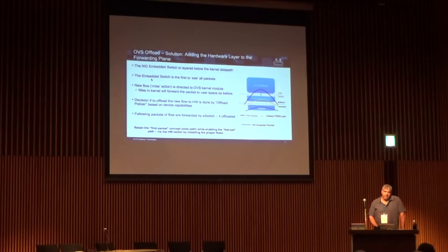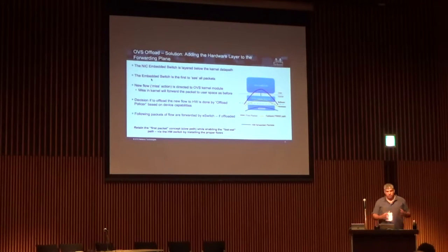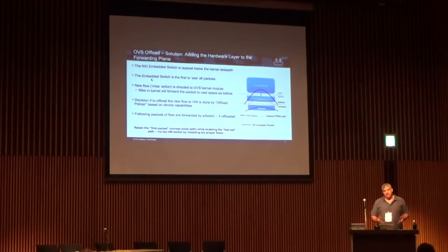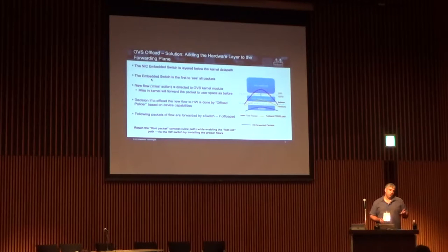Our performance numbers use VXLAN encapsulation for the traffic, and we get about 25 to almost 30 million packets per second without any CPU required. When you compare to DPDK — because our comparison is against DPDK Open vSwitch, not plain Linux — we get much better performance with zero CPU. Typically a DPDK OVS uses four or more cores to forward 10 to 15 million packets per second, and we get almost double that with zero cores required. The server can use those four cores for an additional VM instead.